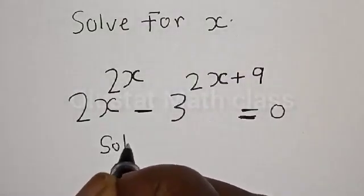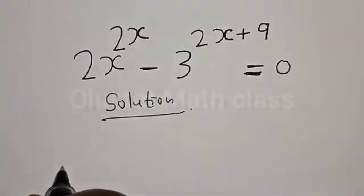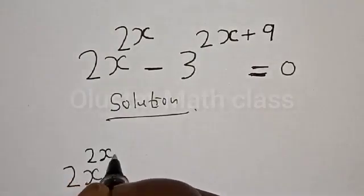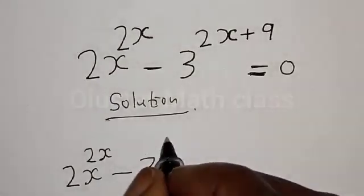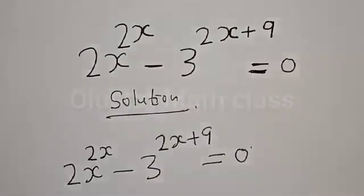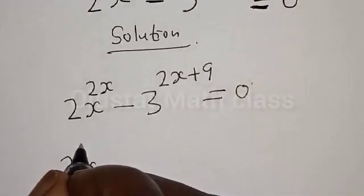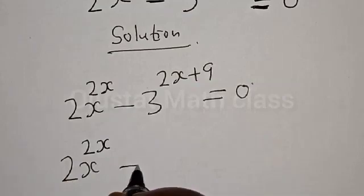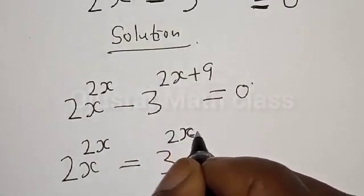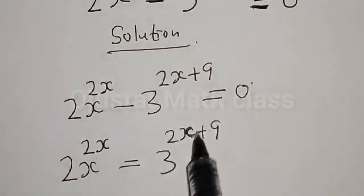Solution. We have the given equation: 2s raised to power 2x minus 3 raised to power 2x plus 9 is equal to 0. Then we have 2s raised to power 2x is now equal to 3 raised to power 2x plus 9, because the minus 3 raised to power 2x plus 9 becomes positive when moved to the right-hand side.